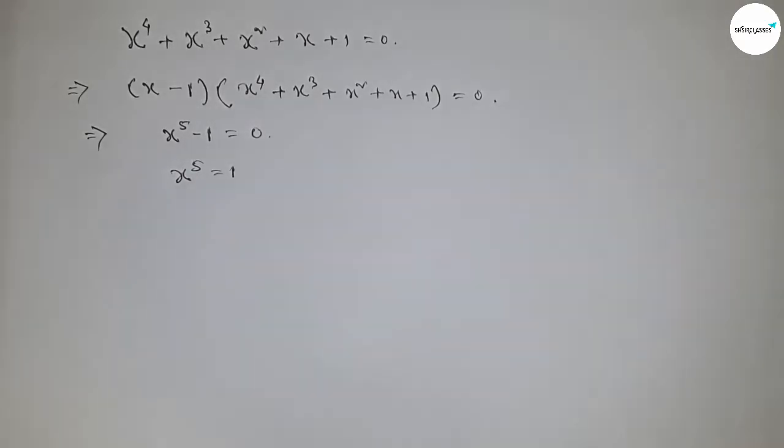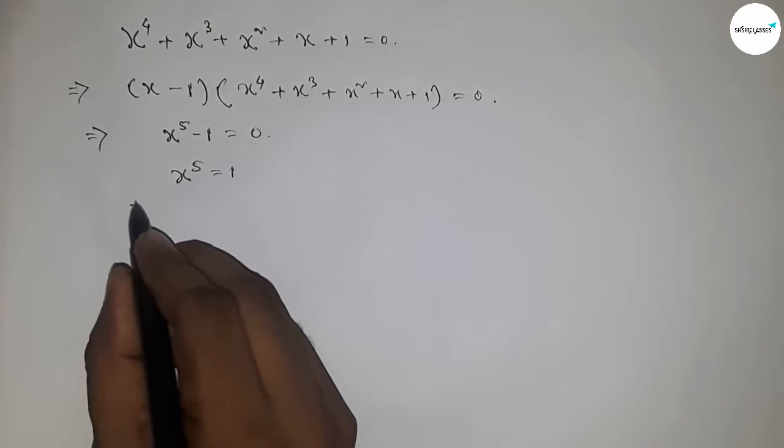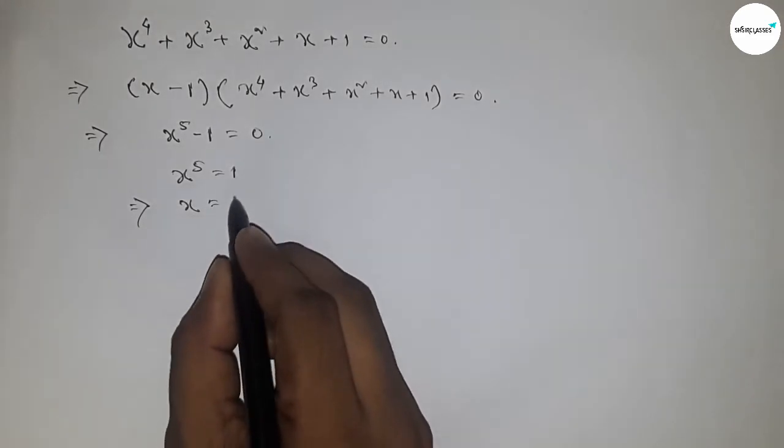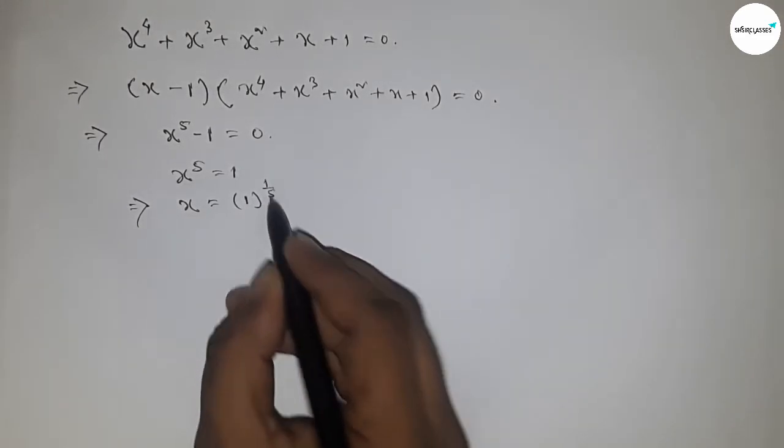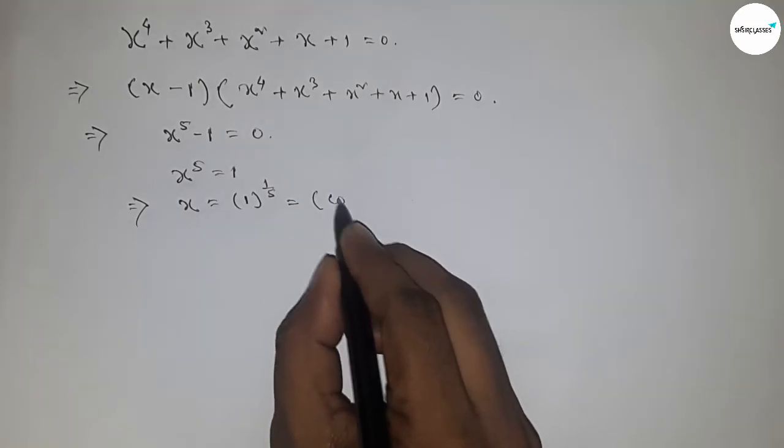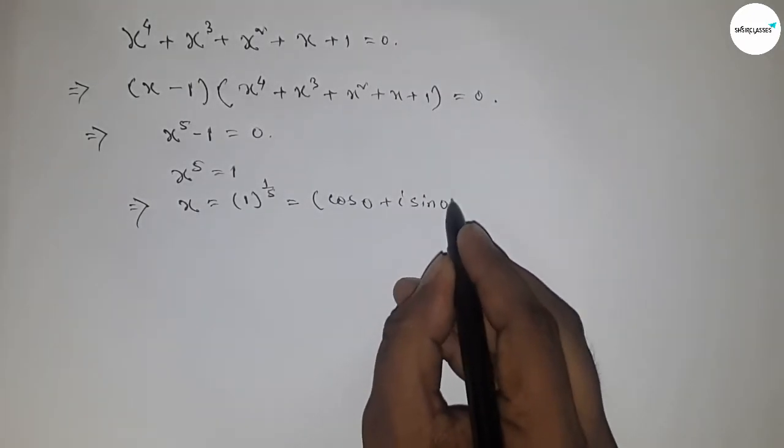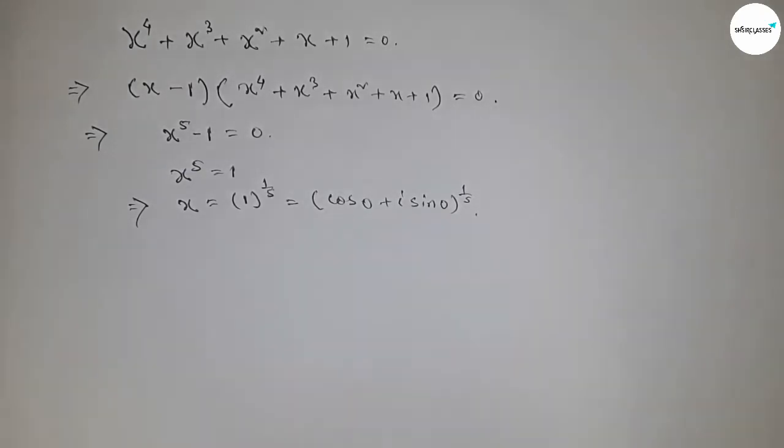⁵ = 1. Now x⁵ = 1 has only one real root and four complex roots. So x = 1^(1/5), which can also be written in the form (cos 0 + i sin 0)^(1/5).